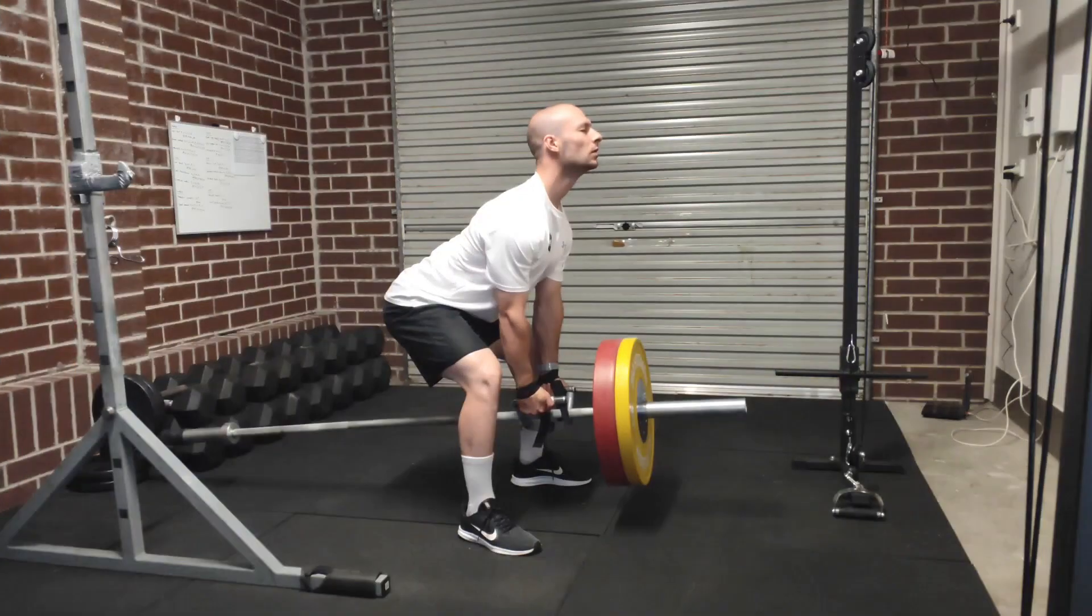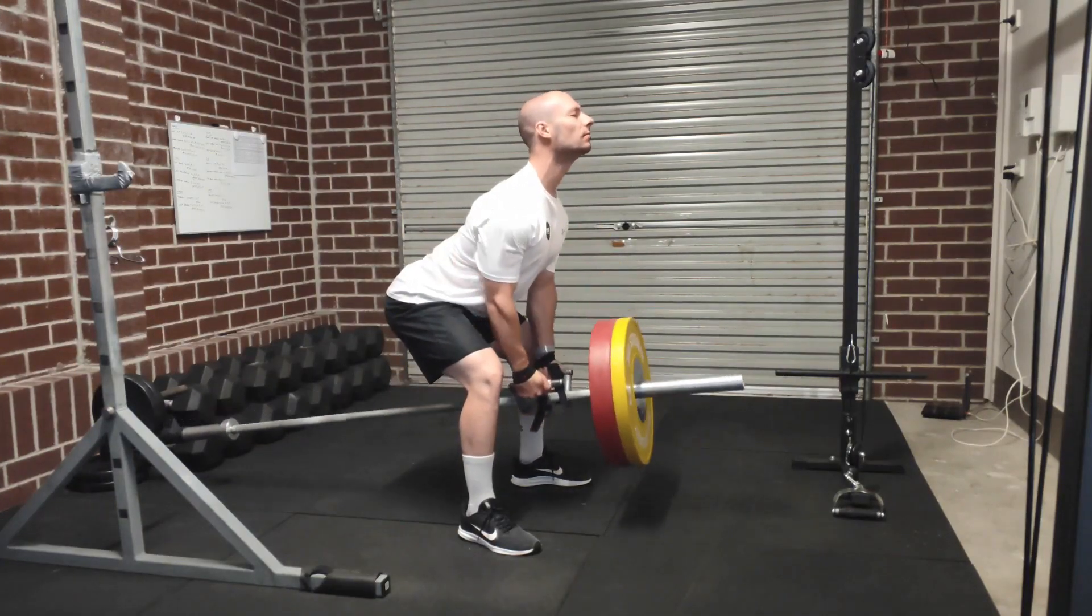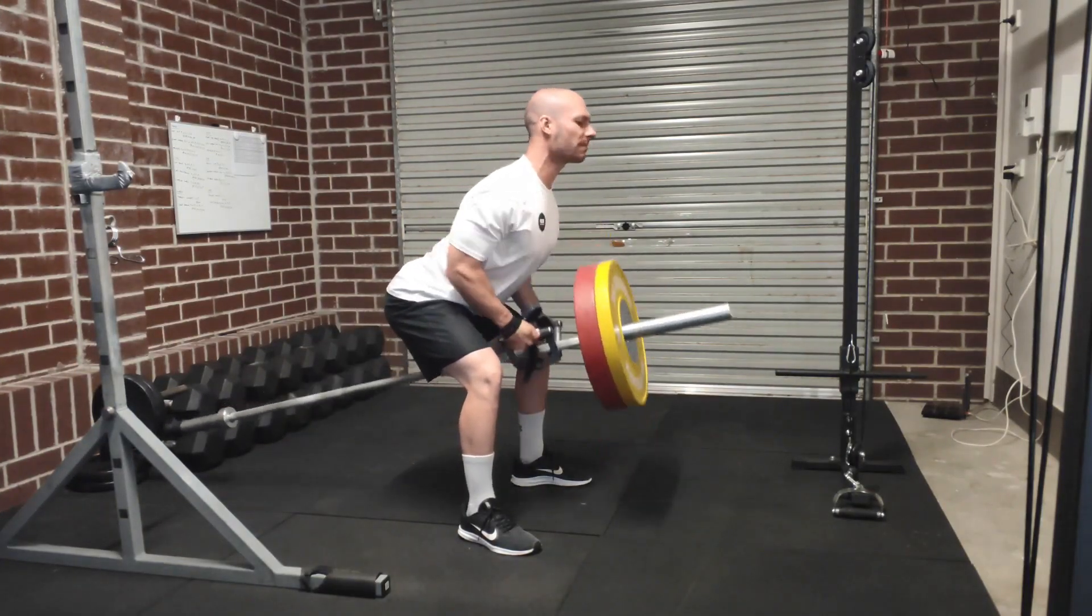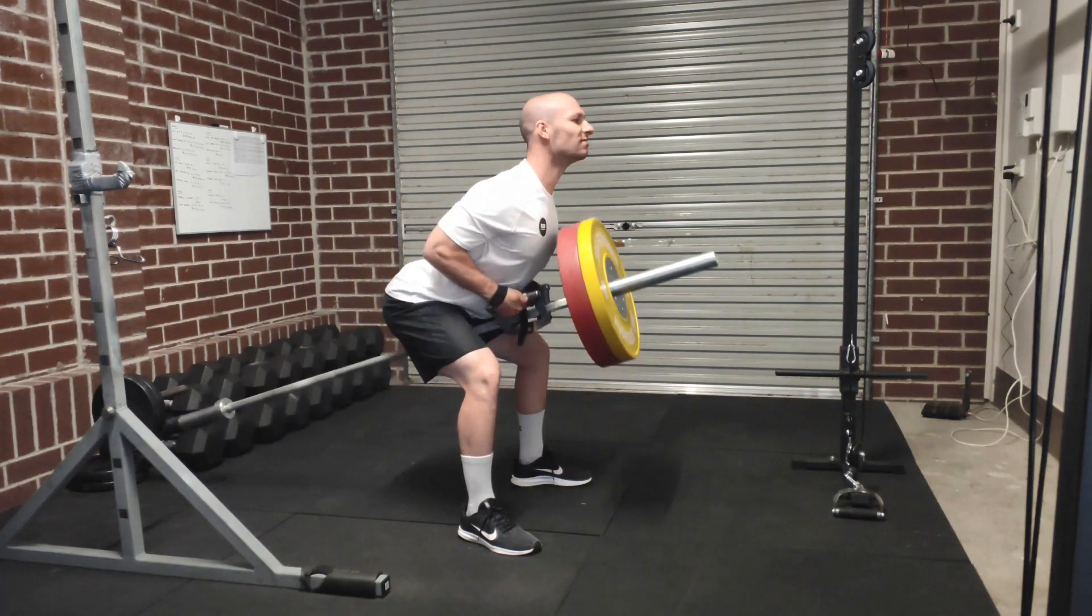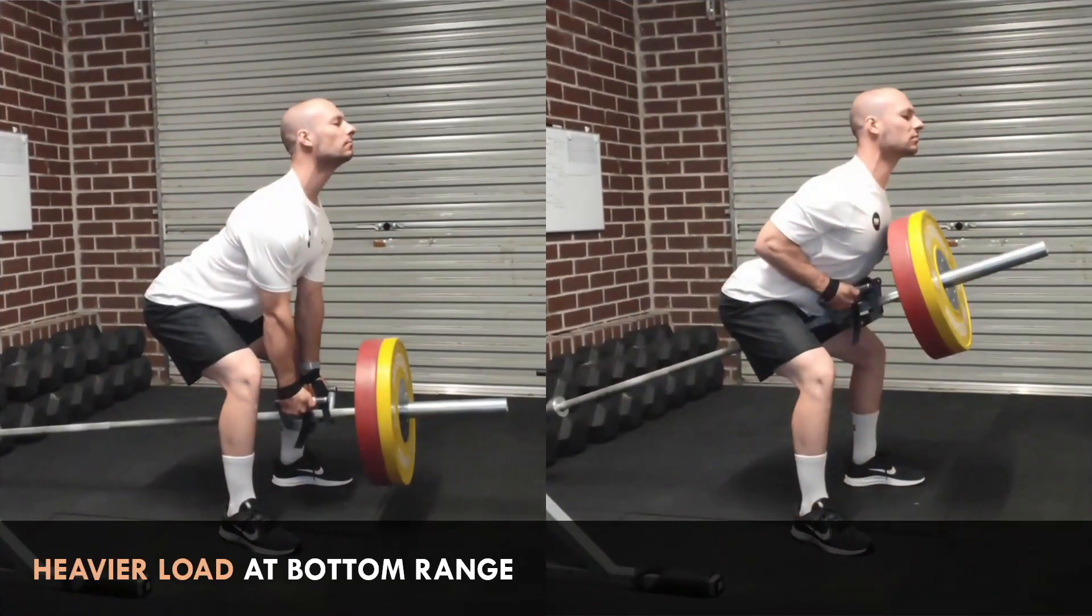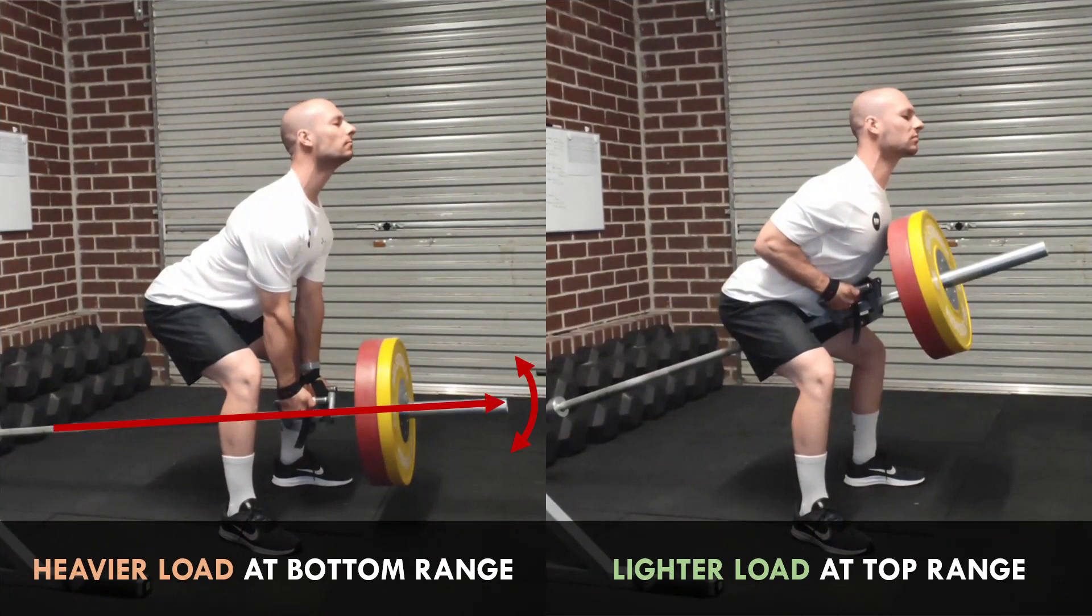In this case we can make the tension curve more constant by varying the external load during the lift. This can be achieved a number of ways, but a simple fix would be to implement an exercise like a landmine row instead of the barbell row. The landmine row naturally involves a heavier load at the bottom range and a lighter load at the top range. This is because the angle of the barbell is more horizontal to the ground at the bottom and more vertical at the top. This means that more force is required to initially lift the load, but force demands decrease as the load is brought closer to the body. This will provide a more constant tension curve and likely result in a better hypertrophic stimulus for the back muscles.